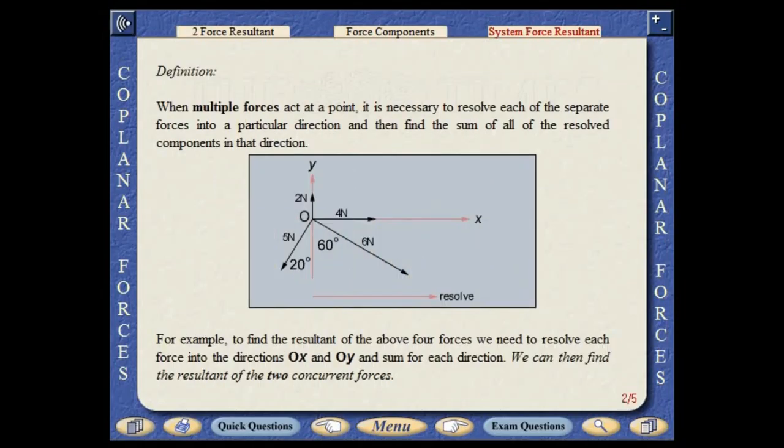When multiple forces act at a point, it is necessary to resolve each of the separate forces into a particular direction and then find the sum of all the resolved components in that direction. To find the resultant of the above four forces, we need to resolve each force into the same two directions and sum for each direction. We can then find the resultant of the two concurrent forces.